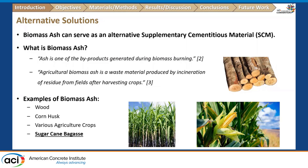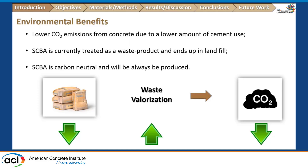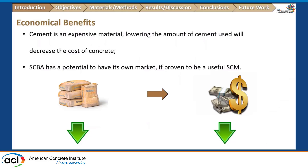For this project we looked into sugarcane bagasse ash (SCBA), derived from sugarcane waste used to make sugar. When combusted, it produces a pozzolanic material with a siliceous composition. Sugarcane is a very abundant waste, and using it as an SCM provides environmental benefits such as lowering CO2 emissions and diverting waste from landfills. It is a carbon-neutral material and has economic benefits by decreasing concrete cost and having potential as its own market.